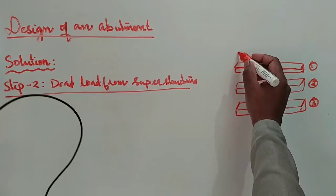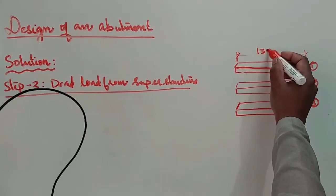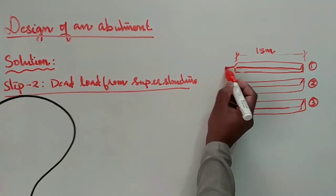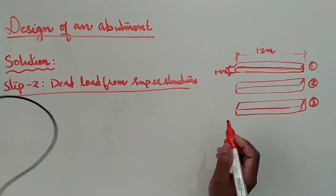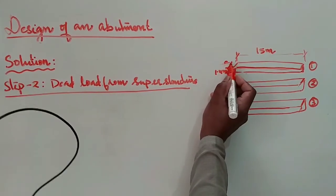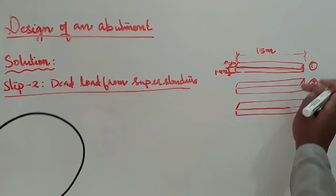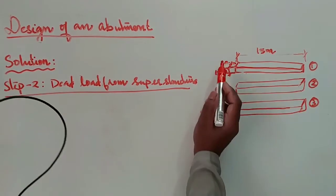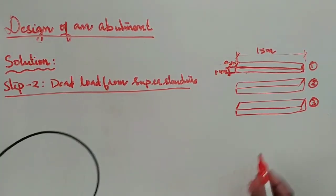The span of the bridge is given in the question as 15 meters. The depth of the girder is 1.4 meters, also given in the question. Let the width of the girder be 300 mm, that is 0.3 meters. We have three girders: one, two, and three. The span is 15 meters, depth of girder is 1.4 meters, and width of girder is 300 mm.